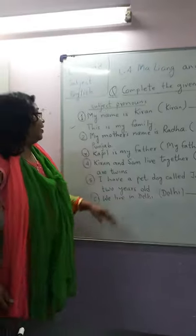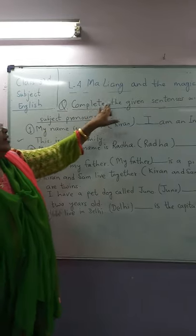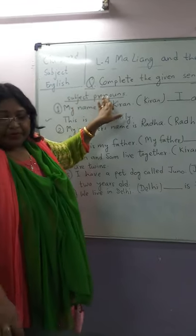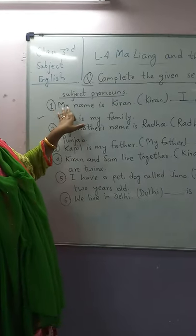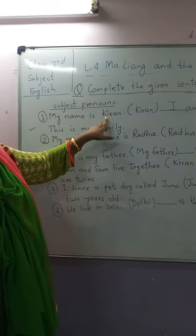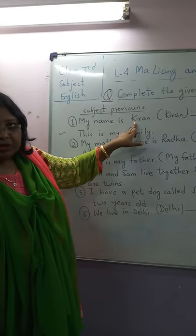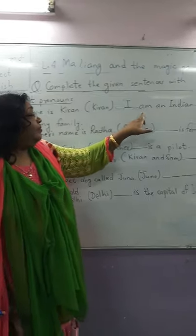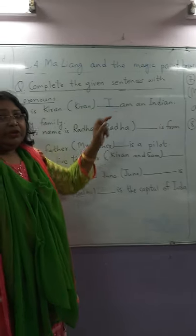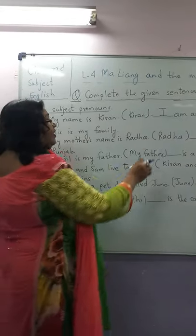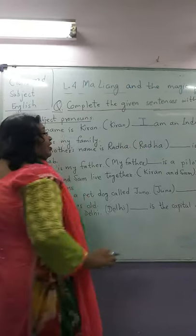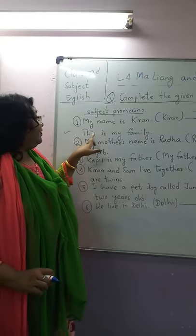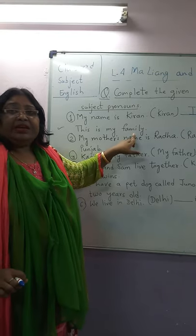Here are your questions. The task is to complete the given sentences with subject pronouns. The first one is: my name is Kiran. Kiran is telling about herself. Kiran dash am an Indian. So what she will write is 'I am an Indian, and this is my family.'